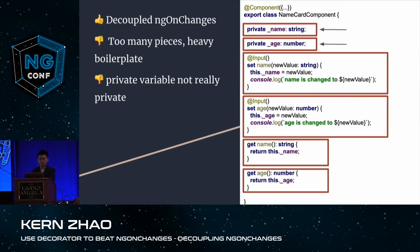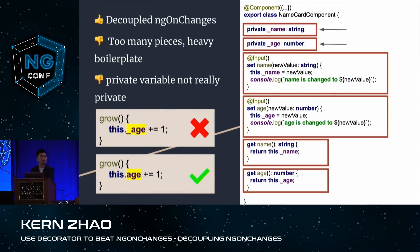Finally, the private variable is not truly private within the component. By that I mean: don't access it directly — if you want to read it, use the getter; if you want to write it, use the setter. But this rule is not enforced. People would easily make a mistake by accessing the private variable directly — for example, if writing a grow method that increments age by one, accessing the private variable directly will not trigger the setter function.